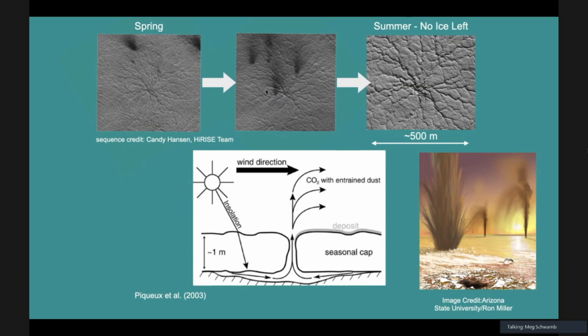These are dubbed araneiform, so we think they are forming as part of this process of carbon dioxide jet and seasonal fan depositing process. It looks like they take eons to form. There are not a lot of images of new araneiform forming, but where you tend to find araneiform, you tend to find lots more fans coming out of those channels, although the araneiform are actually below that ice sheet.